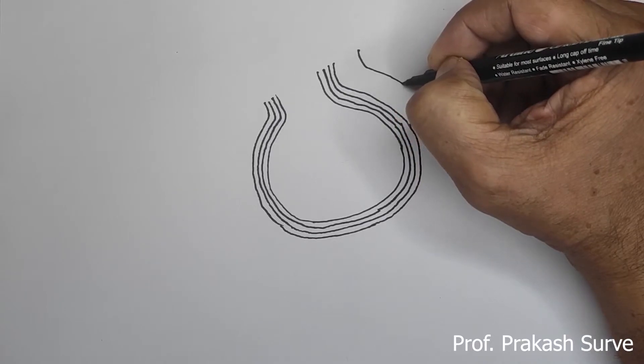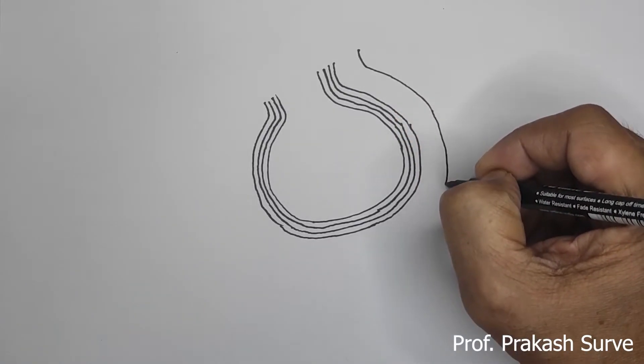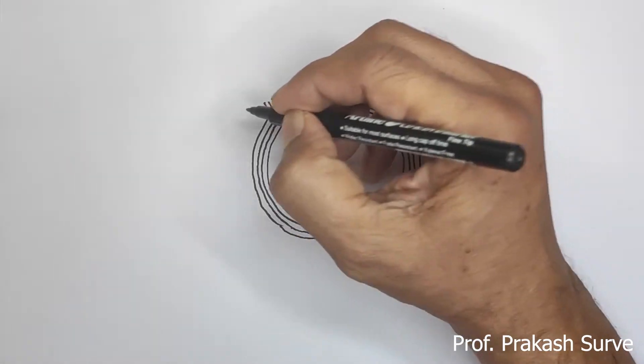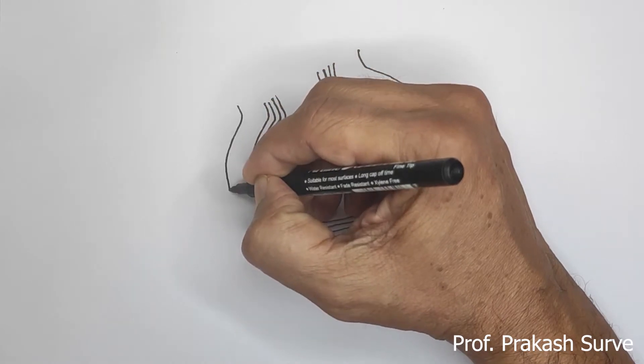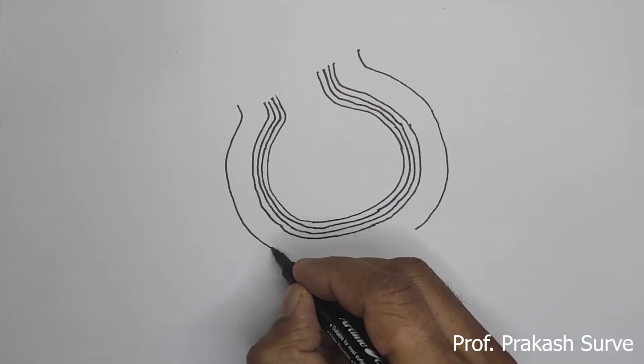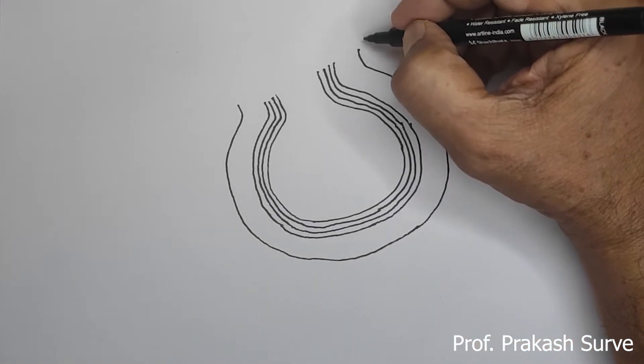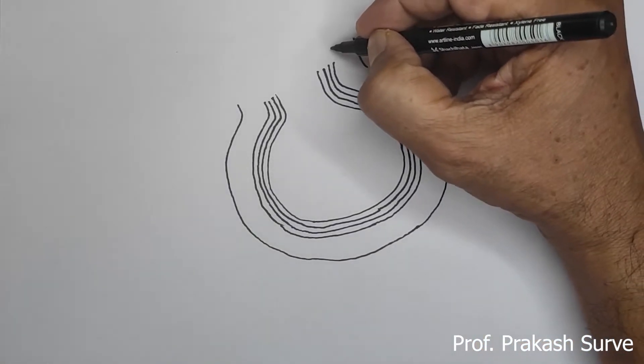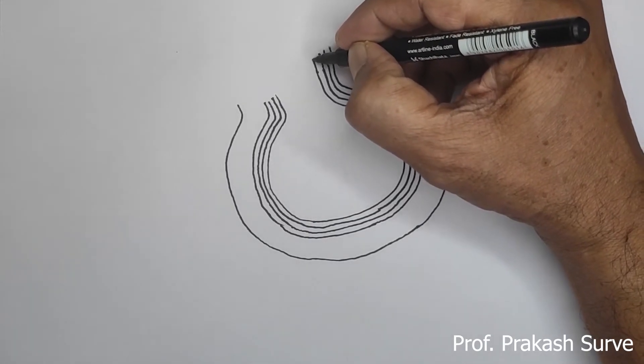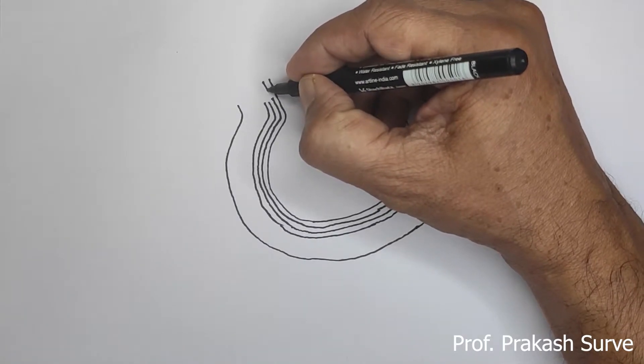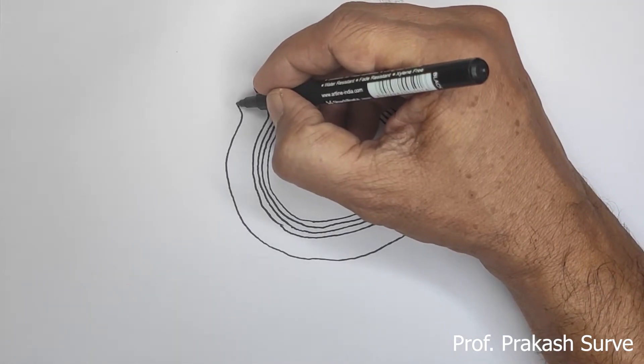Now draw the corresponding line for the capillary through which the blood will flow. Continue and attach to the previous one. We'll extend this a little bit. Same way here also.